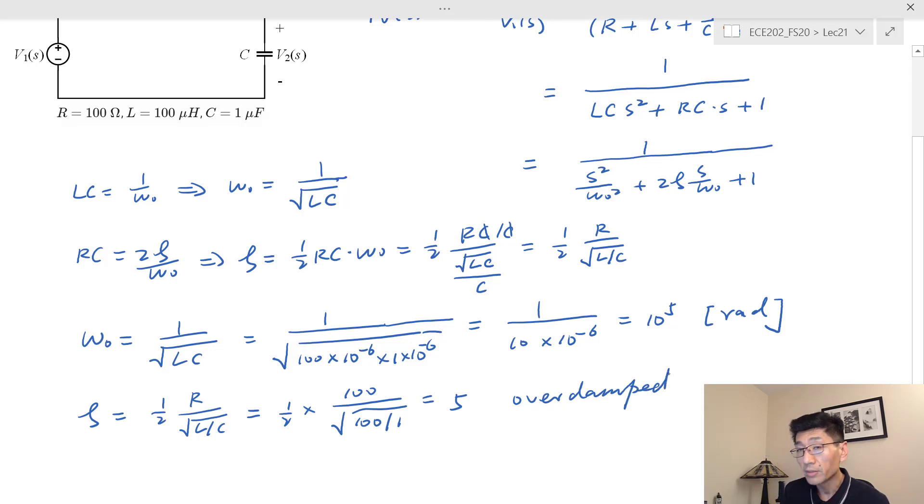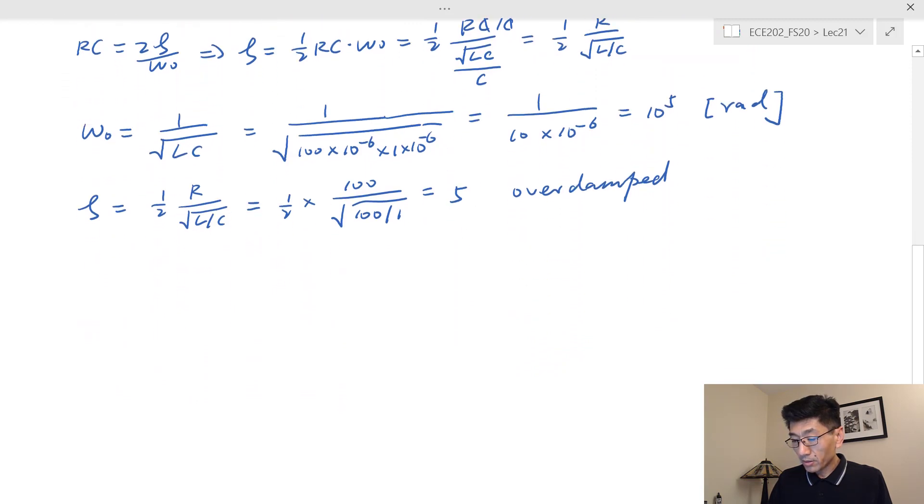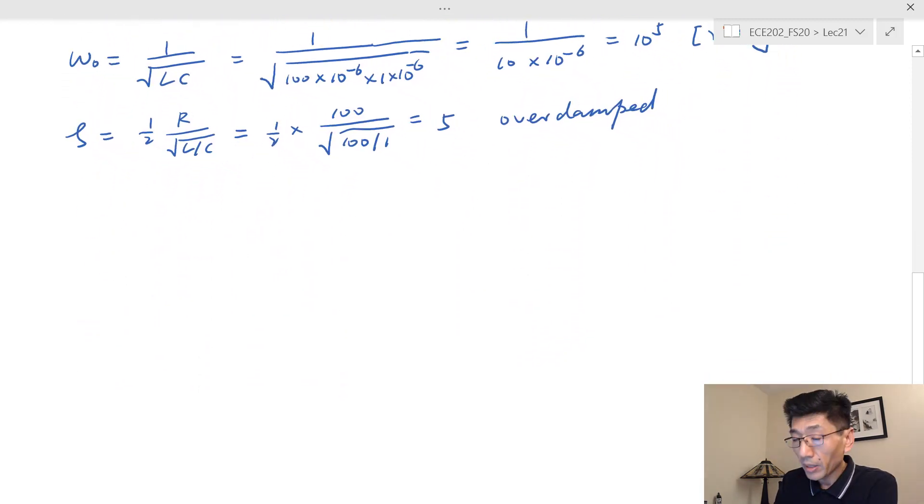That means the Bode plot at ω equal to ω₀ there won't be much oscillation here. We want to see how much higher than the zero dB line if we do the Bode plot approximations. So this is T(jω) in terms of dB, and we know this is second order system and ω₀ is 100k.